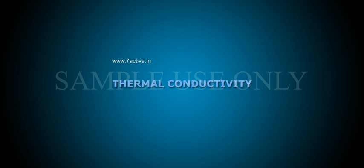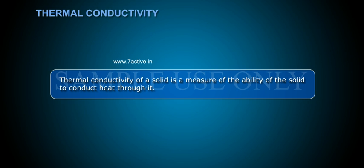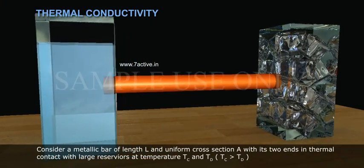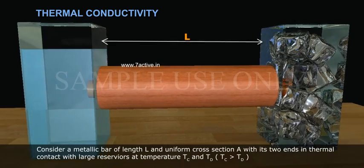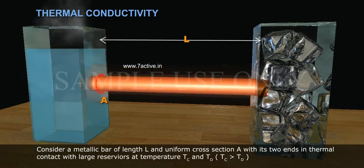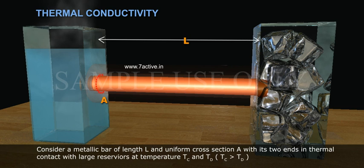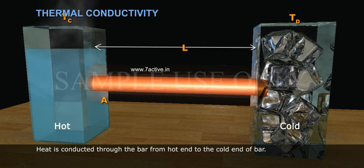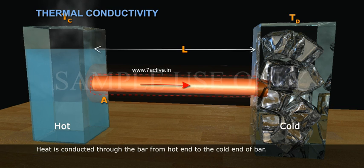Thermal conductivity. Thermal conductivity of a solid is a measure of the ability of the solid to conduct heat through it. Consider a metallic bar of length L and uniform cross section A with its two ends in thermal contact with large reservoirs at temperature Tc and Td. Heat is conducted through the bar from hot end to the cold end of bar.